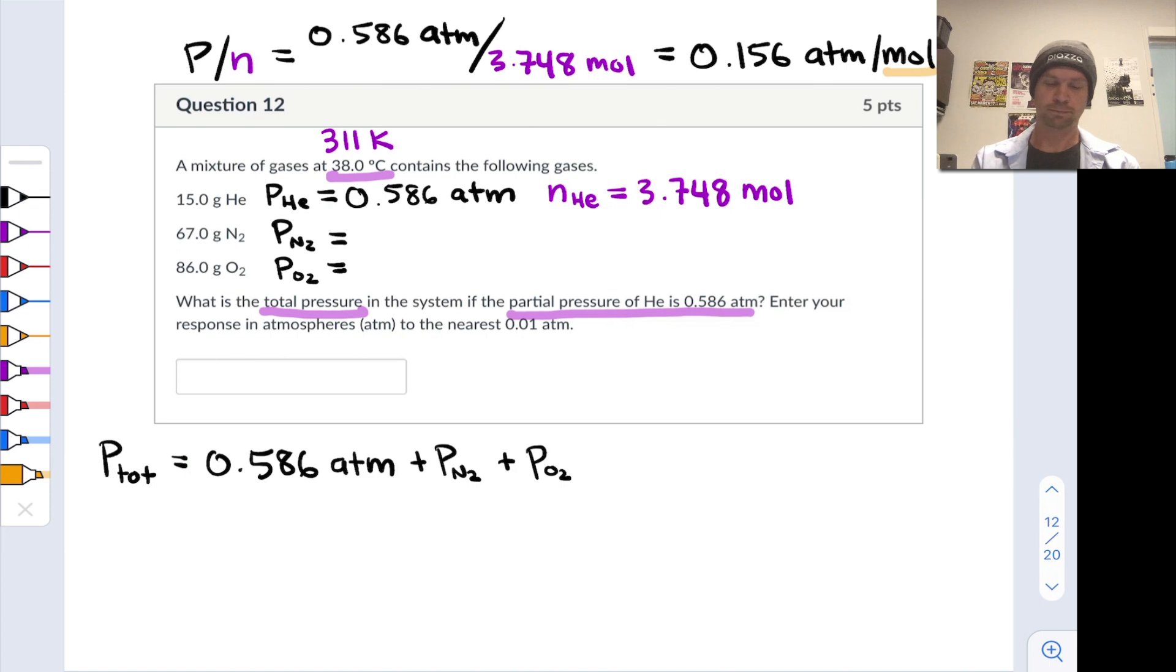If I can determine the moles of the other two gases, which I absolutely can because their masses are given, I can determine the partial pressures of those gases fairly straightforwardly. Here we see a case where using an empirical gas law helps us short circuit this problem and solve it efficiently.